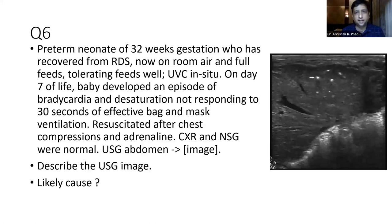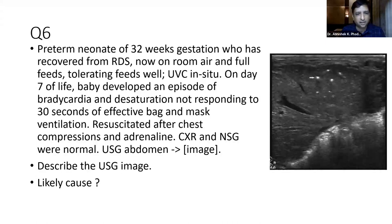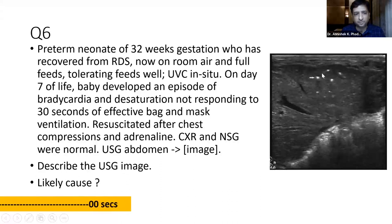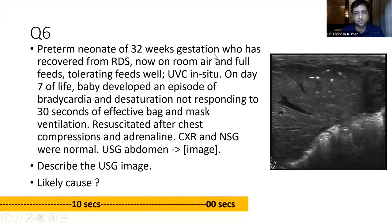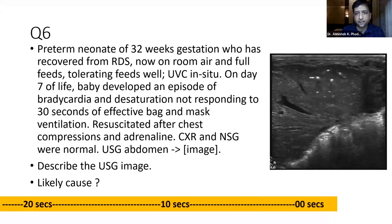This is an interesting case from our unit. A preterm 32-week baby, fully recovered from RDS, in room air, tolerating feeds, with a UVC in situ. On day 7, the baby developed an episode of bradycardia and desaturation not responding to 30 seconds of bag-and-mask ventilation, and was resuscitated after chest compressions and adrenaline. Chest X-ray and neurosonogram were fine. Ultrasound abdomen showed white spots within the liver. Describe the USG image and what is the likely cause for this deterioration.